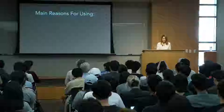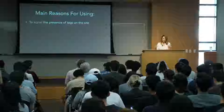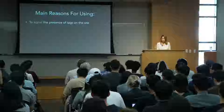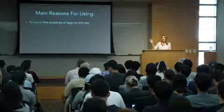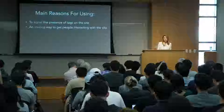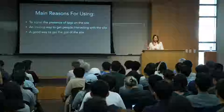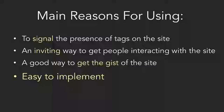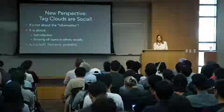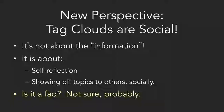So what were these things for? The main reasons people put them on their sites — I did a study of a bunch of people and what they wrote about them online — were to signal the presence of tags on the site, as a tag indicator saying 'hey, we have social stuff here'; as an inviting way to get people interacting with the site; as a way to get the gist of the site. And a big one: easy to implement. People said, 'Oh yeah, it's easy to code in HTML.' My new perspective was: tag clouds are social. They're not about information. They're not about navigation. They're really about signaling that there are tags and generally what the site is about.